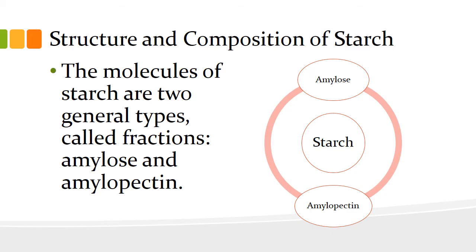To give you more information on starch and cereals, let us discuss the structure and composition of starch. There are two types of starch molecules: amylose and amylopectin. Amylose is a long chain-like molecule, sometimes called the linear fraction, produced by linking together 500 to 2,000 glucose molecules, and is responsible for the gelling characteristics of starch when cooked and cooled. Amylopectin, on the other hand, has a highly branched, bushy type of structure, and contributes cohesion or thickening properties when a starch mixture is cooked in the presence of water.